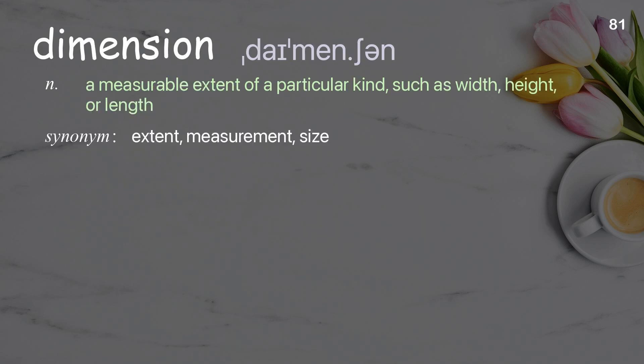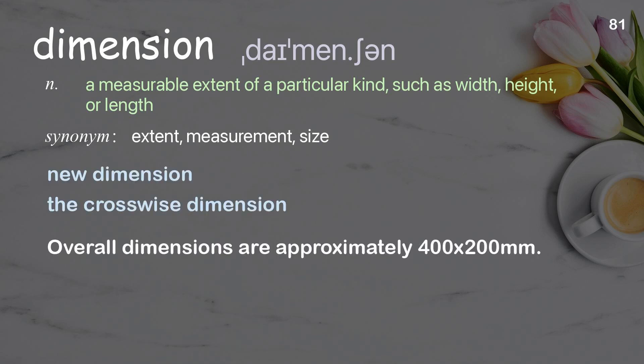Dimension: a measurable extent of a particular kind, such as width, height, or length. Examples: new dimension, the crosswise dimension. Overall dimensions are approximately 400 by 200 millimeters.